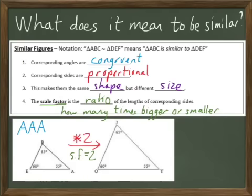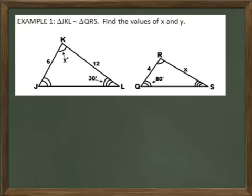So now let's look at a few example problems and see how to solve them. In this first example, triangle JKL is similar to triangle QRS. We're trying to find the values of x and y. Well, I'm going to be a rebel and we're going to find y first.